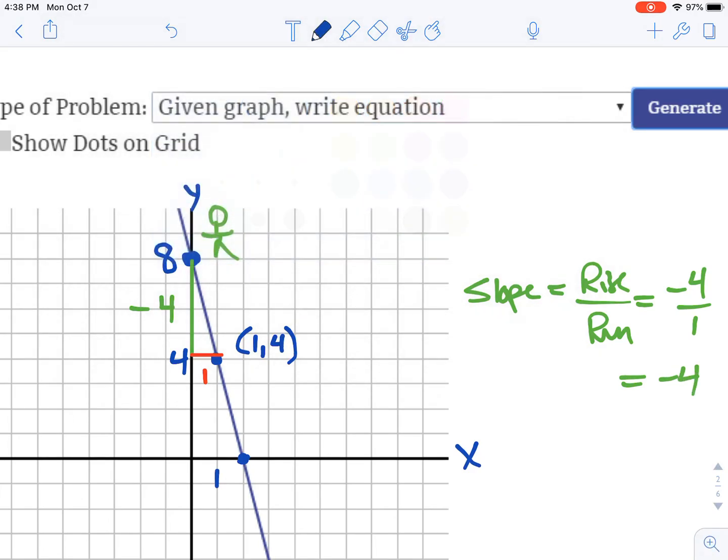Our y-intercept is where it crosses the y-axis, which was at positive 8. So our equation is y = -4x + 8. It's always the slope times x plus the y-intercept.